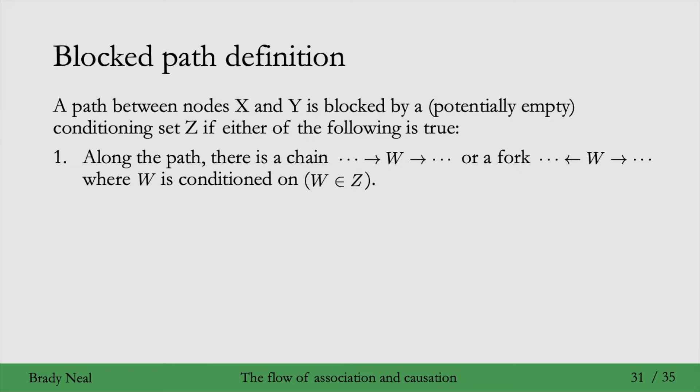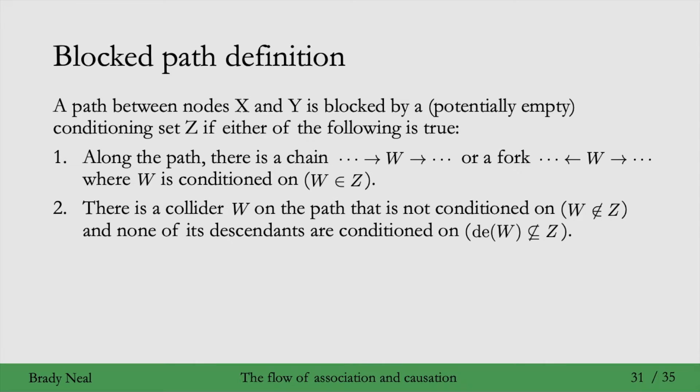And the other way that you can block a path is if there is a collider W on that path that is not conditioned on, so W is not in the conditioning set Z, and none of its descendants are conditioned on. Because we saw that if you condition on its descendants, it's a bit like conditioning on the collider in the sense that it induces association between the parents. So that's what a blocked path is, and you can see how it uses the building blocks of what we saw in chains, forks, and immoralities.